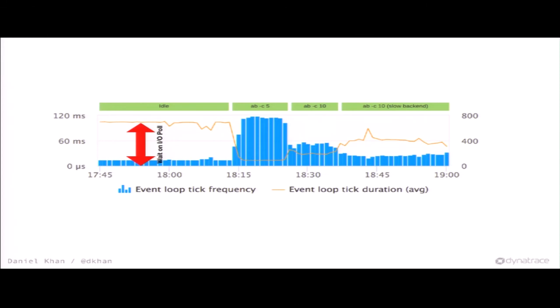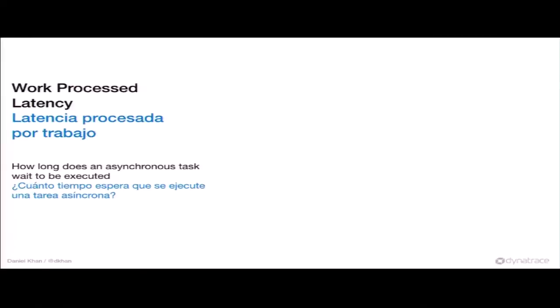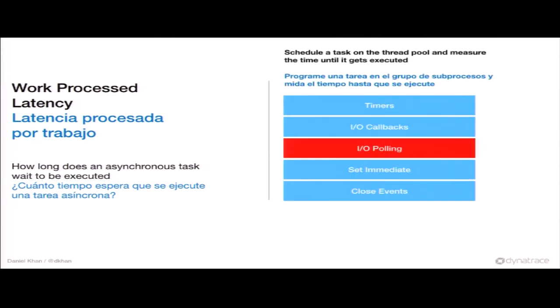We figured out tick frequency alone isn't something we want in the product, so we invented something else. We came up with 'work process latency' — we measure how long an asynchronous task waits to be executed. We simply schedule a task on the thread pool and wait until it's executed. As a native module via C++, you can schedule your work item on the thread pool, and then see how long it takes to be executed. Obviously if it takes long, there's a lot more pending on the thread pool.